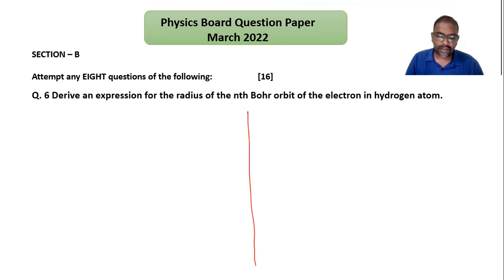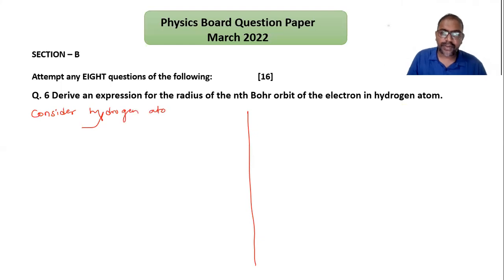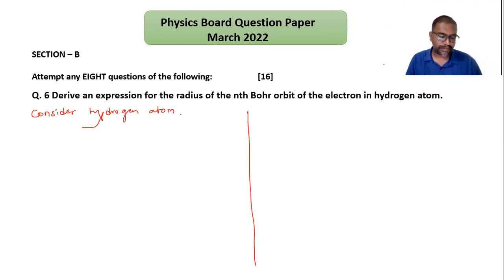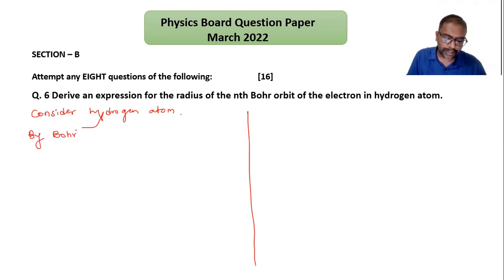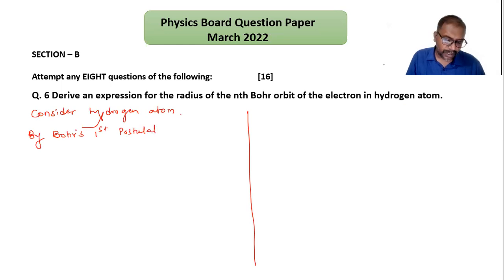We consider hydrogen atom, where an electron is revolving around the nucleus. Hydrogen atom has a single electron and single proton. By Bohr's first postulate, the centripetal force for a revolving electron is provided by the electrostatic force of attraction between the positively charged nucleus and the negatively charged electron.